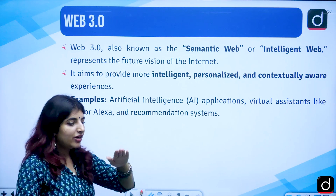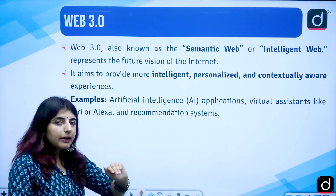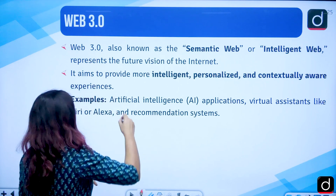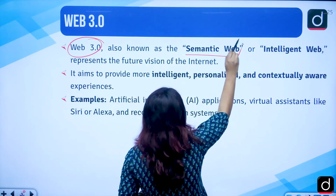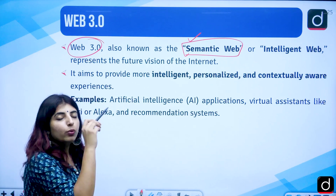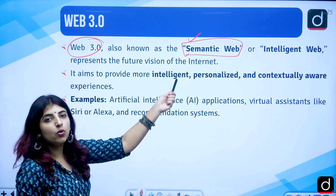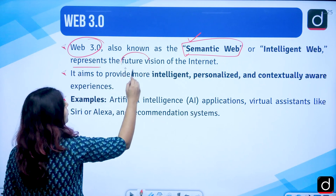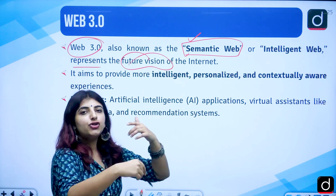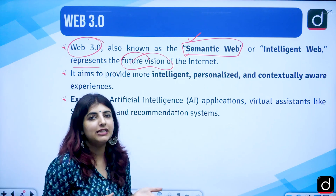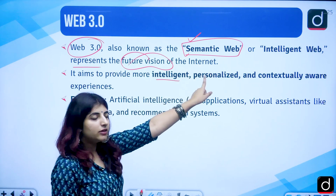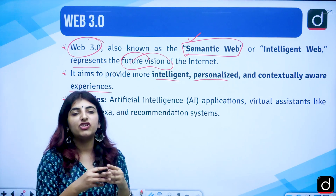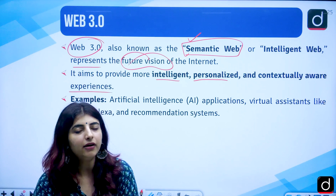We have Web 3.0, which is the third stage of the development of the internet and WWW. Web 3.0 is also known as the semantic web — this question has been asked in the NET examination: which of these is known as a semantic web? The answer is Web 3.0. It is also called the intelligent web, and it represents the future vision of the internet with intelligent, personalized, customized, and contextually aware experiences.